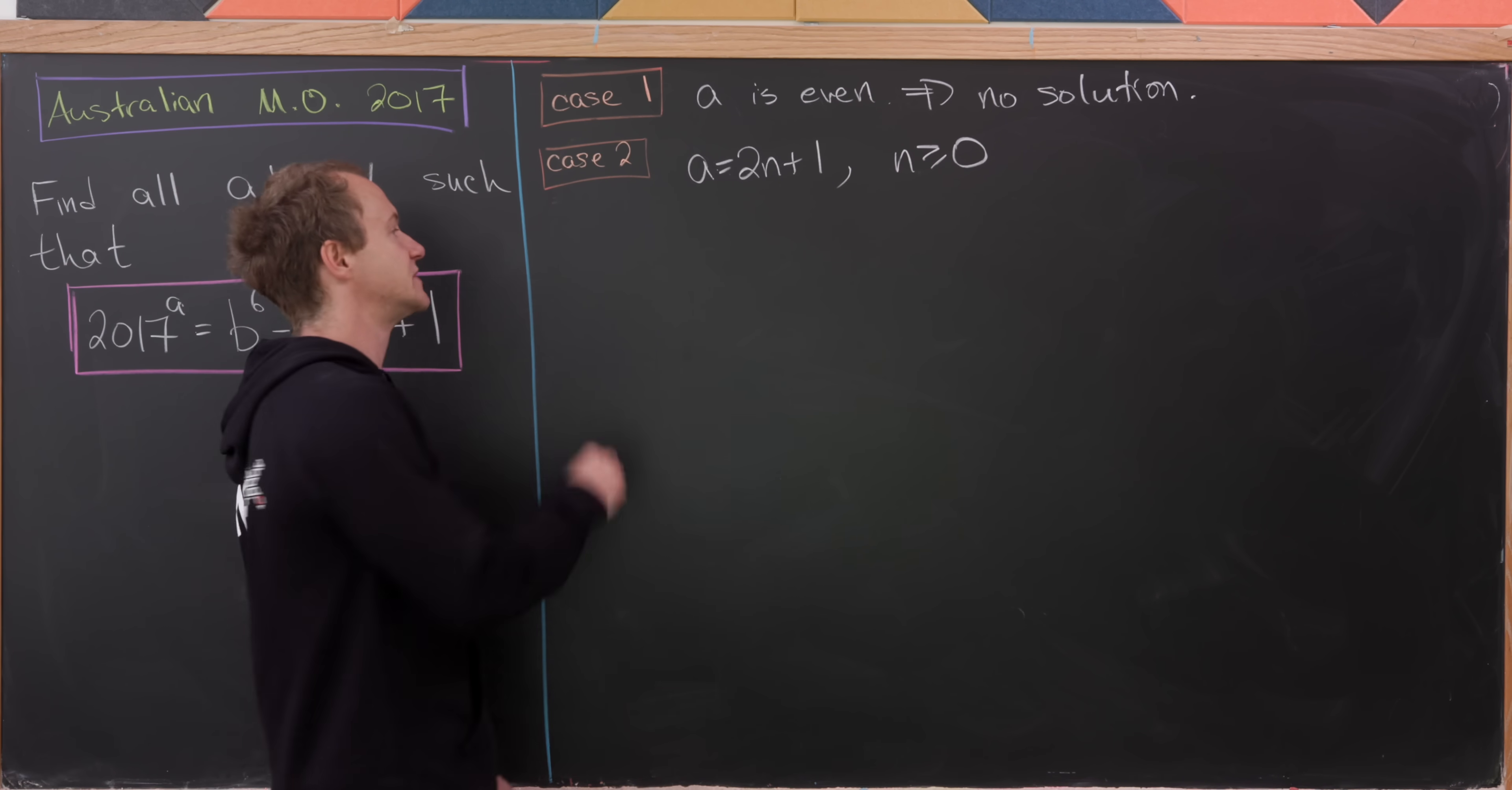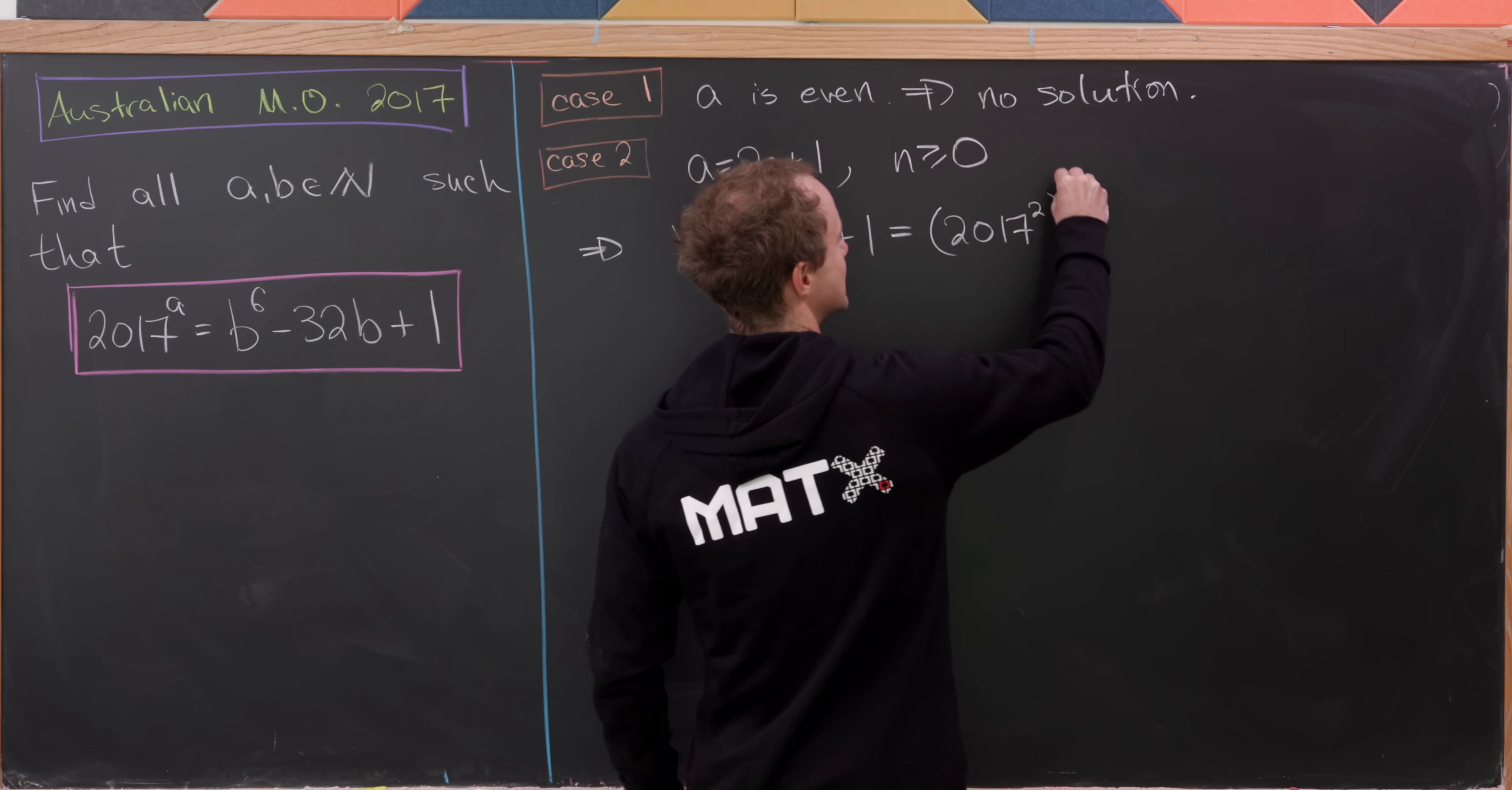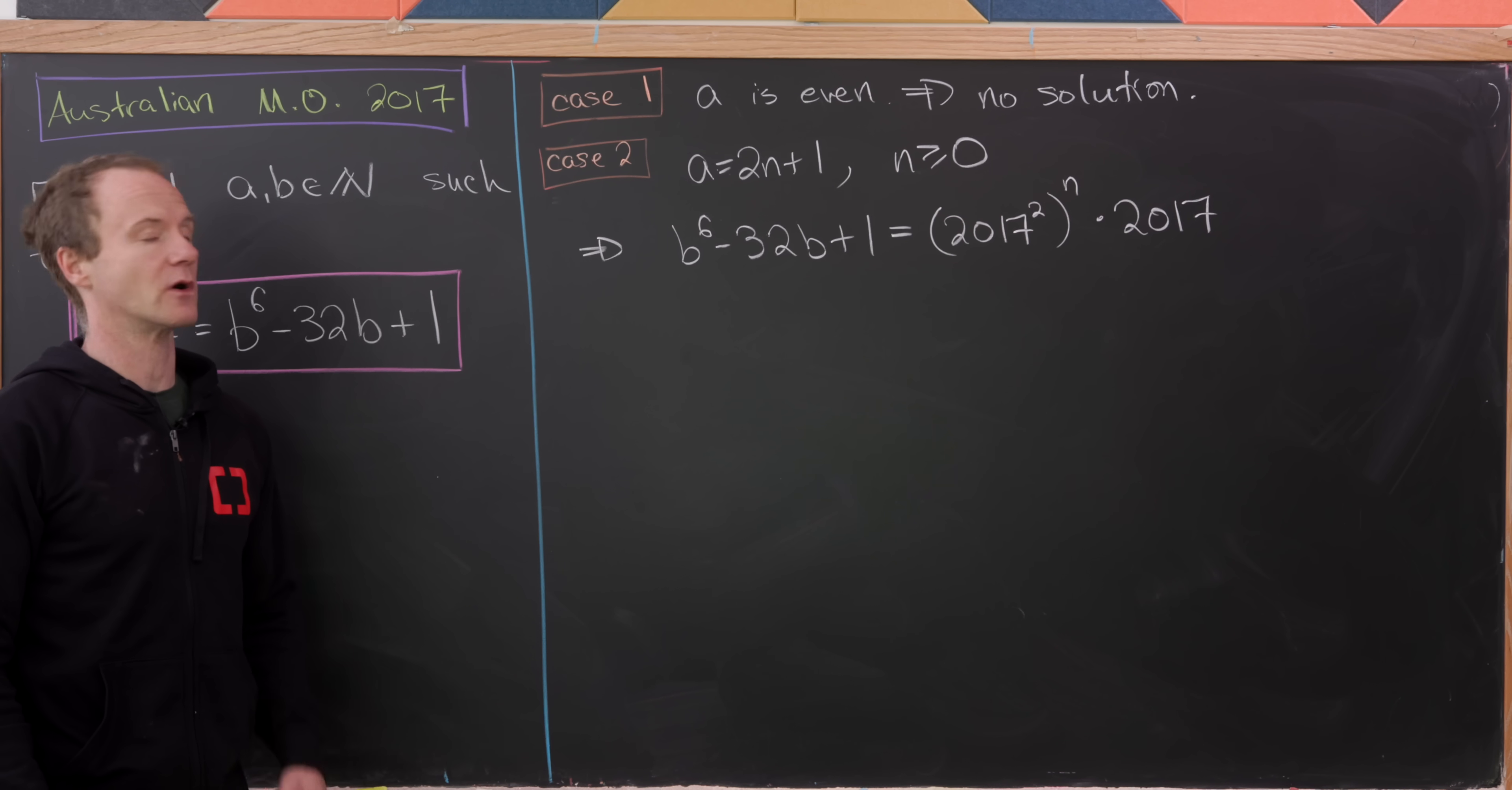So now let's throw that into our equation over here. So that means we have B^6 minus 32B plus 1 is equal to, I'm going to write this as (2017^2)^N times 2017, just using exponent rules over there on the right hand side.